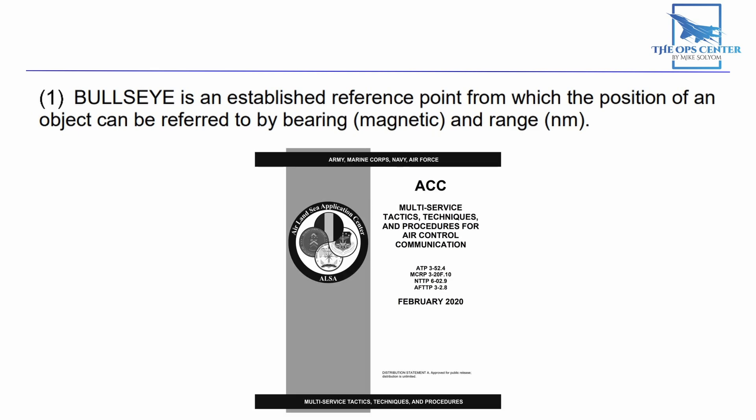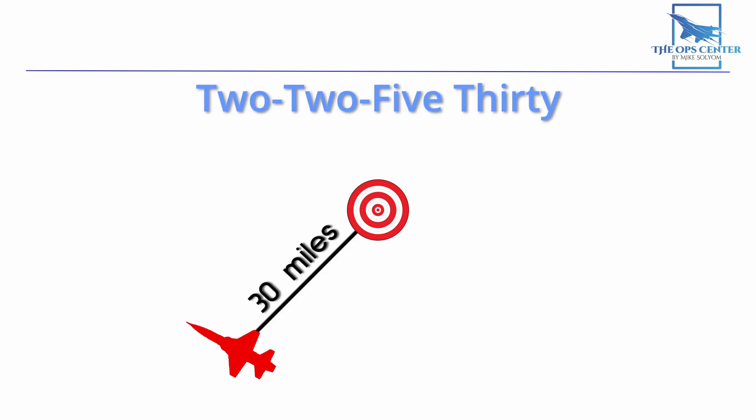Bullseye is an established reference point from which the position of an object can be referred to by bearing and range. A contact is described by its bearing and range from bullseye — for example, this would be read as 225-30. You might hear some people read that as 225-430, but adding that '4' in there could lead to confusion since '4' sounds like the number four, so stay away from this habit.